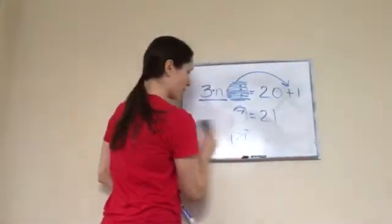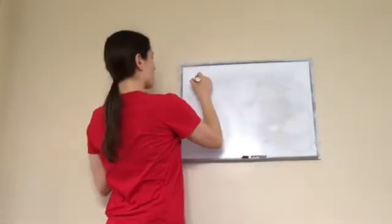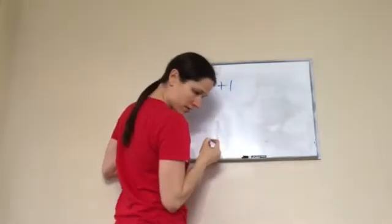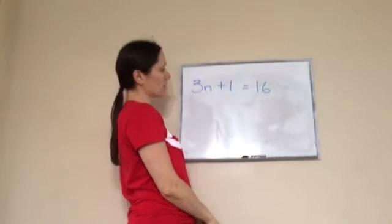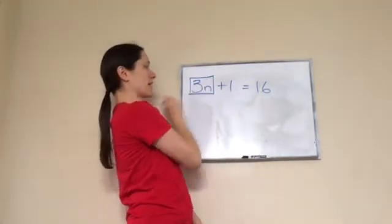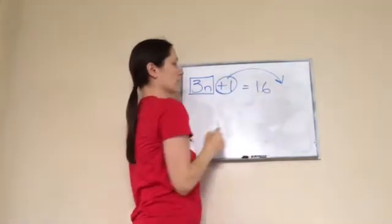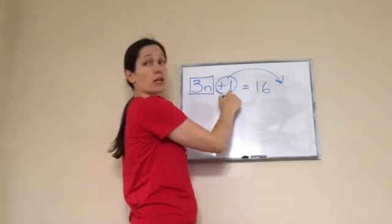Let's try another one. 3n plus 1 equals 16. Now this is what I want to get by itself. 3 times what equals? It's going to move over there.